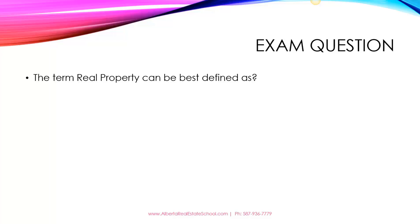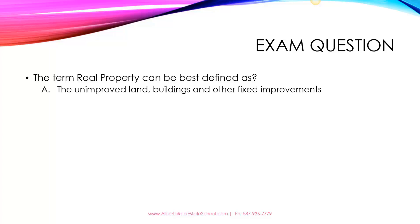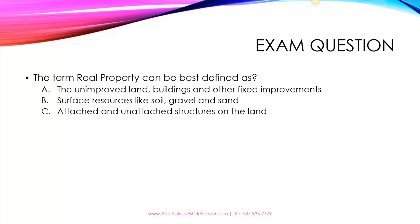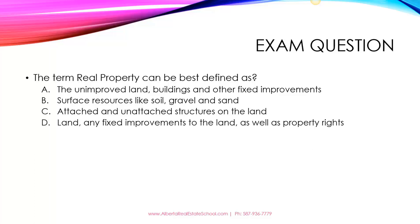The term real property can be best defined as — the options are: A, the unimproved land, buildings, and other fixed improvements; B, surface resources like soil, gravel, and sand; C, attached and unattached structures on the land; or D, land, any fixed improvements to the land, as well as property rights.